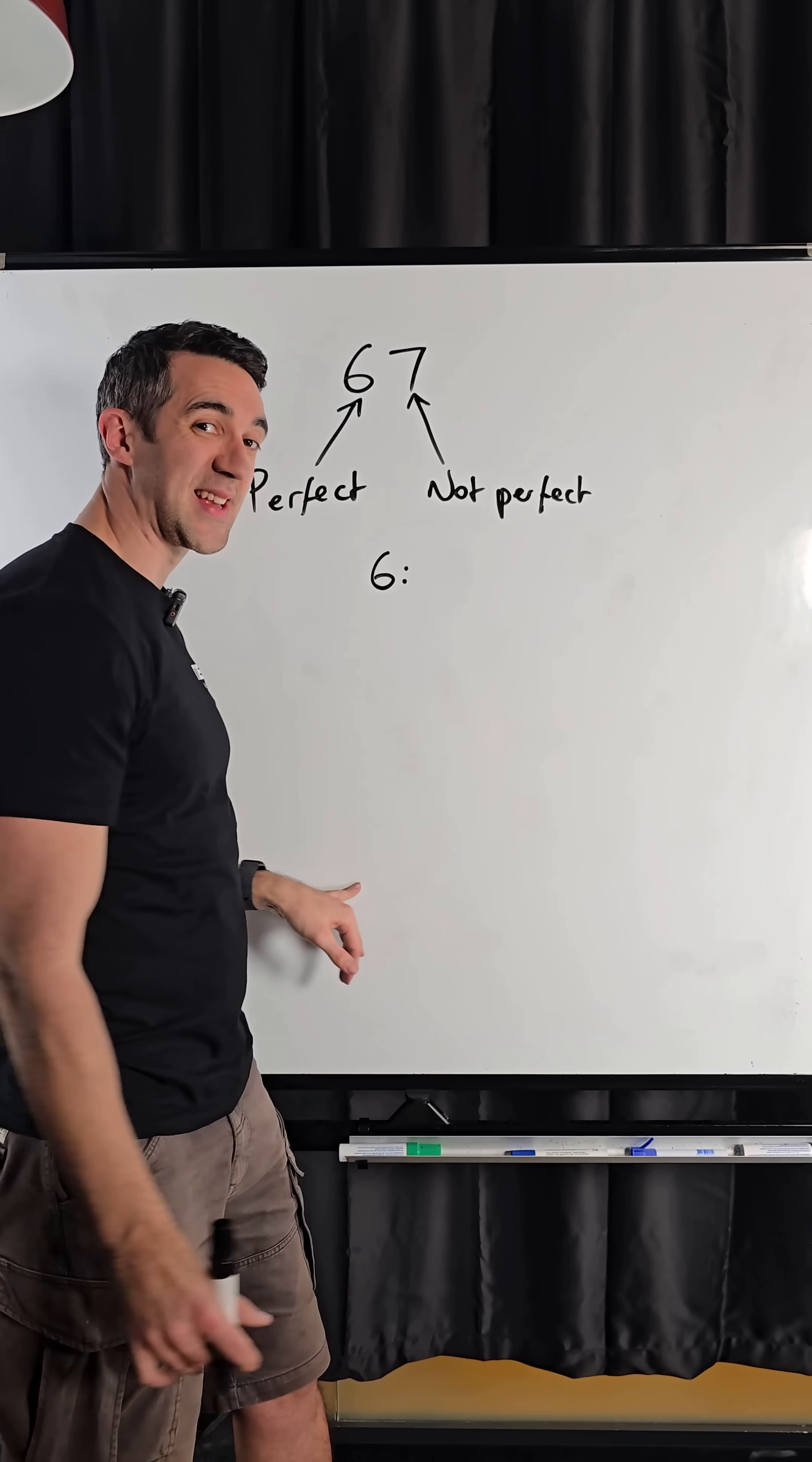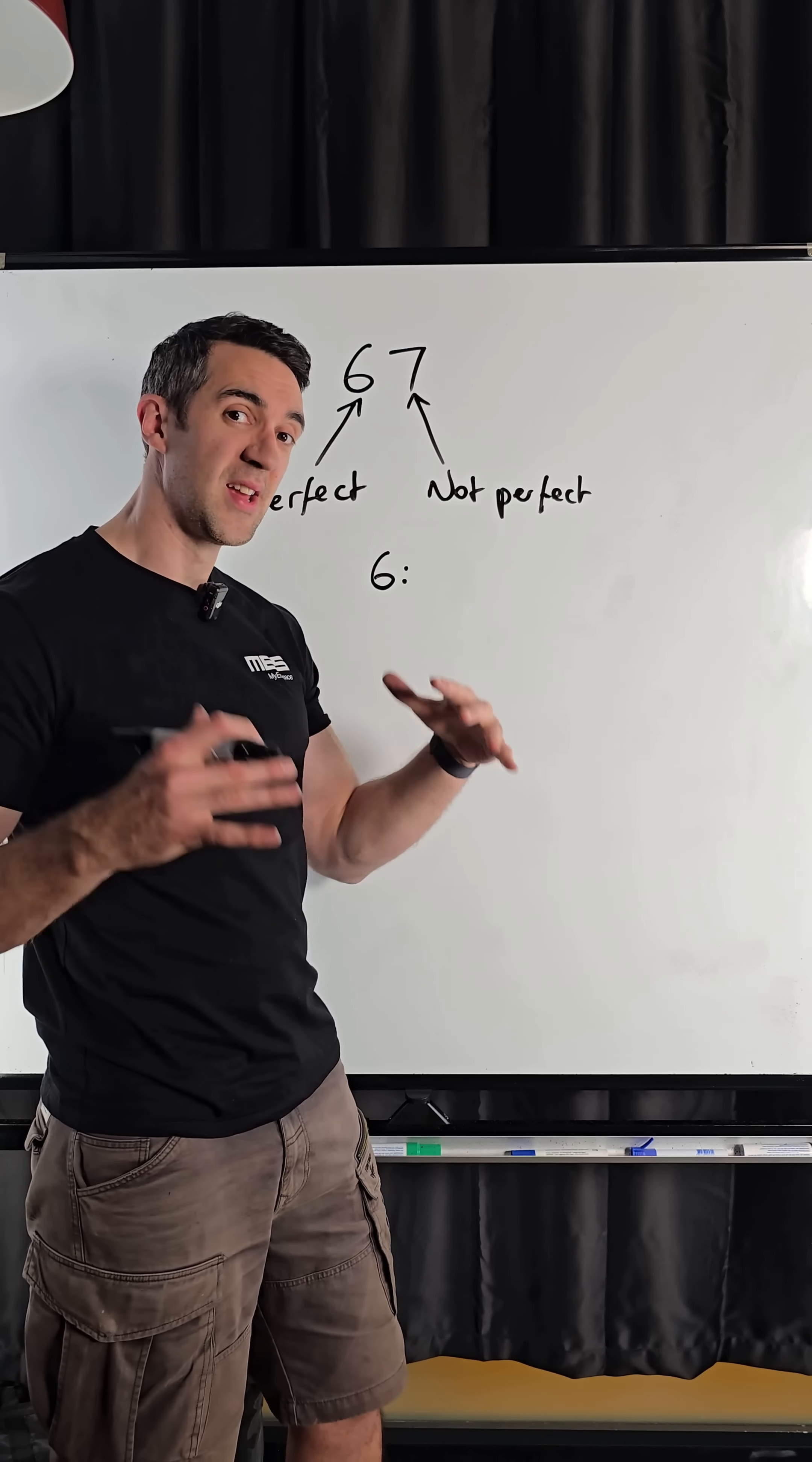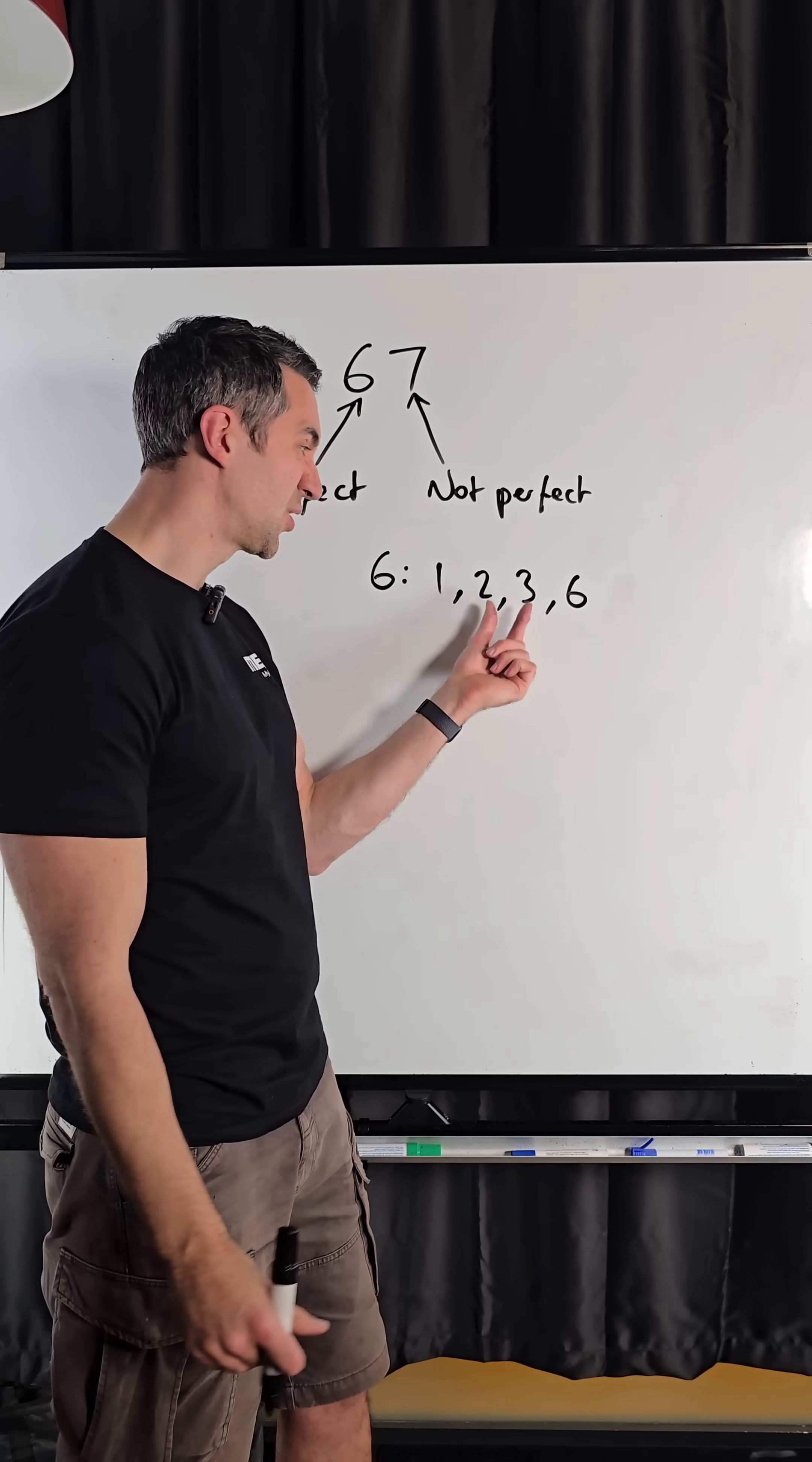If I take the number six and I list all of the factors of six, those are the numbers that multiply to make six. I have one, two, three, and six. One times six is six, two times three is six.